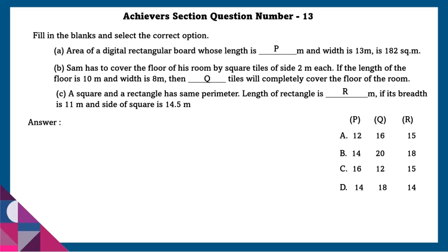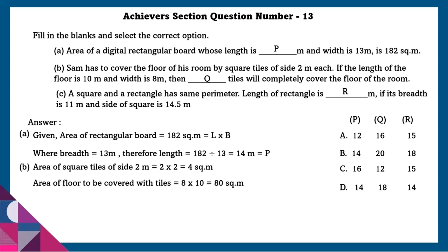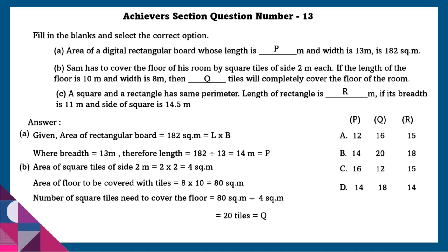Achiever section question number 13: Fill in the blanks and select the correct option. Part A: Area of a rectangular board whose length is P meters and width is 13 meters is 182 square meters. Area equals length times breadth, so 182 equals P times 13, giving P equals 14 meters. Part B: Sam covers a floor of length 10 meters and width 8 meters using square tiles of side 2 meters each. Area of each tile equals 4 square meters. Area of floor equals 80 square meters. Number of tiles needed equals 20, that is Q.